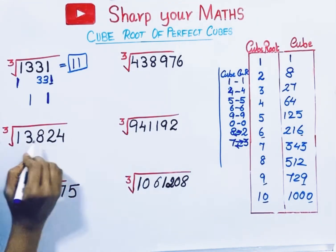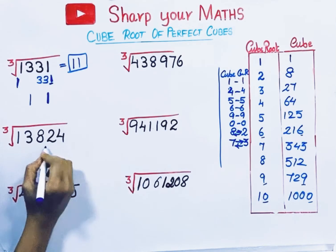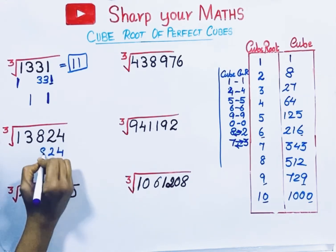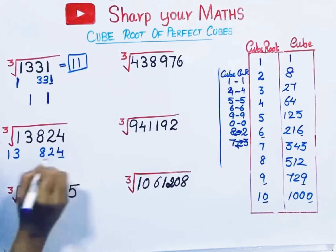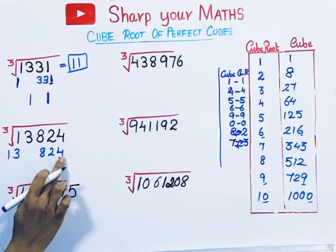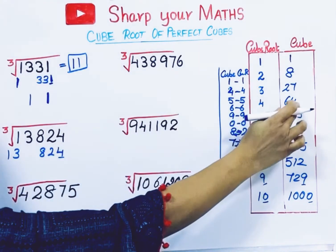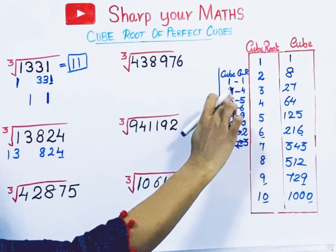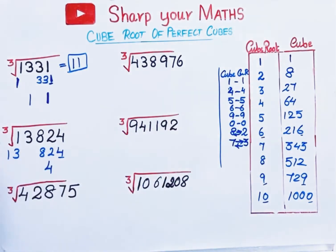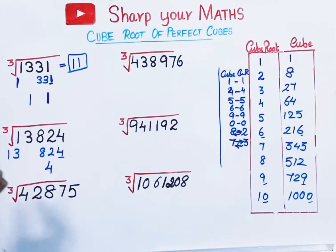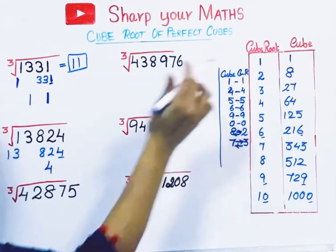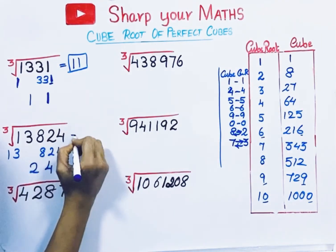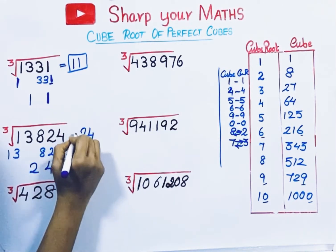Next number: 13824. Take the number and divide it into groups — last 3 digits, one group; remaining digits, another group. Check the unit digit in the rightmost group — it ends with 4. If the cube ends with 4, its cube root ends with 4. Now take the left group, which is 13. 13 is close to the cube 8, so take its cube root, which is 2. We got the cube root of 13824, which is 24.